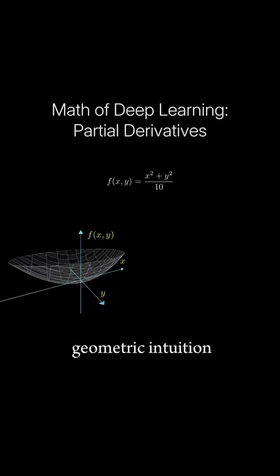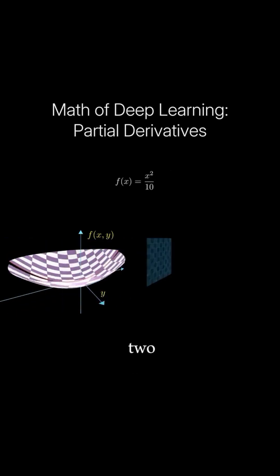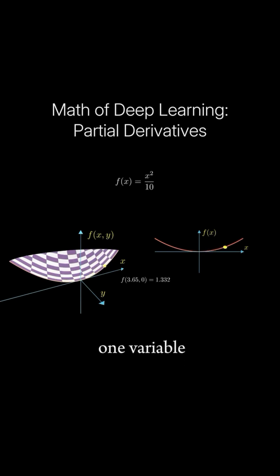To gain some geometric intuition, let's freeze y at zero. This effectively slices the graph in two. Since y is fixed, f now depends only on x and becomes a regular function of one variable.